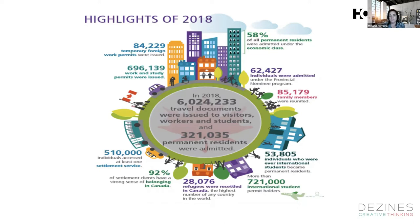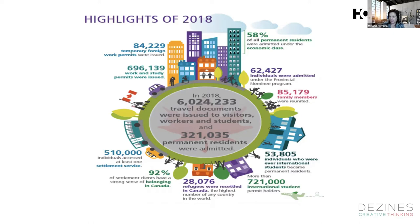Looking at the Provincial Nomination Program, 62,000 people entered that program in 2018, and 321,000 PRs were admitted. International student permit holders — study permits — you're not one of 10, you're one of 720,000 back in 2018. It's not only South Africans coming in; there are many people from throughout the world coming into Canada, so it takes extra effort to stand out.